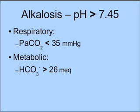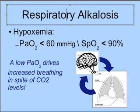Welcome back to part 5: alkalosis. Alkalosis is defined as a pH greater than 7.45. There are two causes: a respiratory alkalosis caused by low CO2, and a metabolic alkalosis caused by bicarb greater than 26 or so.